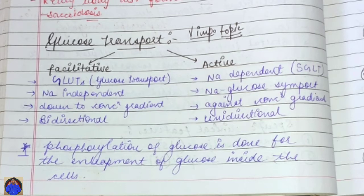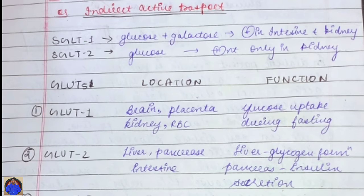Now we will discuss the location and function of GLUTs and SGLTs, starting with SGLTs. There are two SGLTs: SGLT1 and SGLT2. SGLT1 transports glucose and galactose, and is located in the intestine and kidney. SGLT2 transports only glucose and is located only in the kidney.